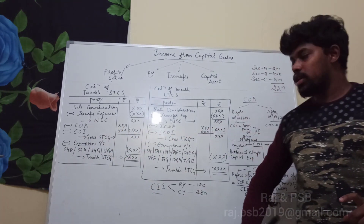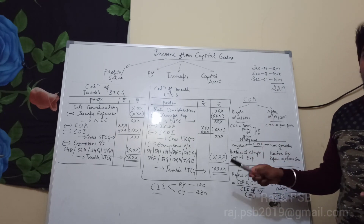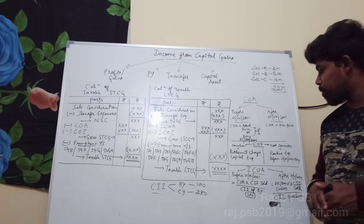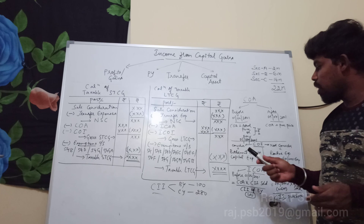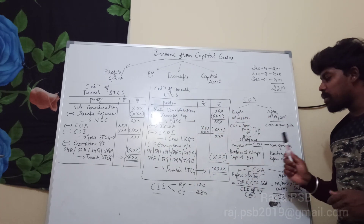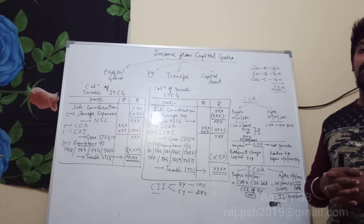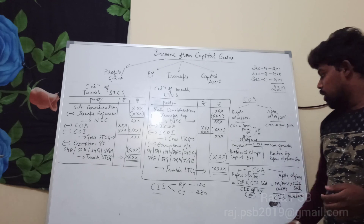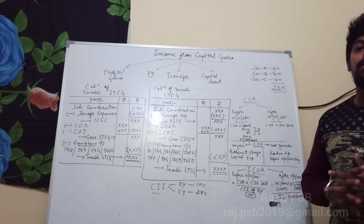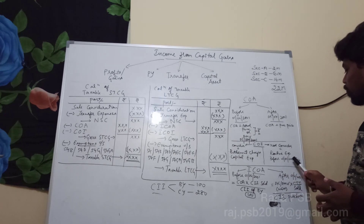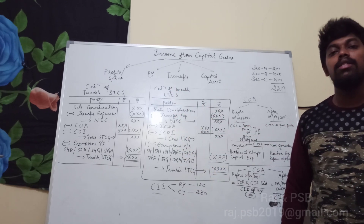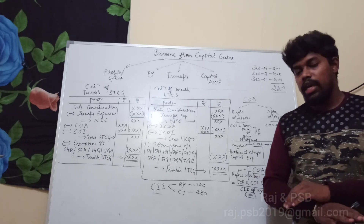For cost of improvement: any capital expenditure incurred on an asset can be treated as cost of improvement. However, routine or recurring expenses will not be treated as cost of improvement. Also, any expenses made on an asset before 1/4/2001 will not be treated as cost of improvement — we have to ignore those.